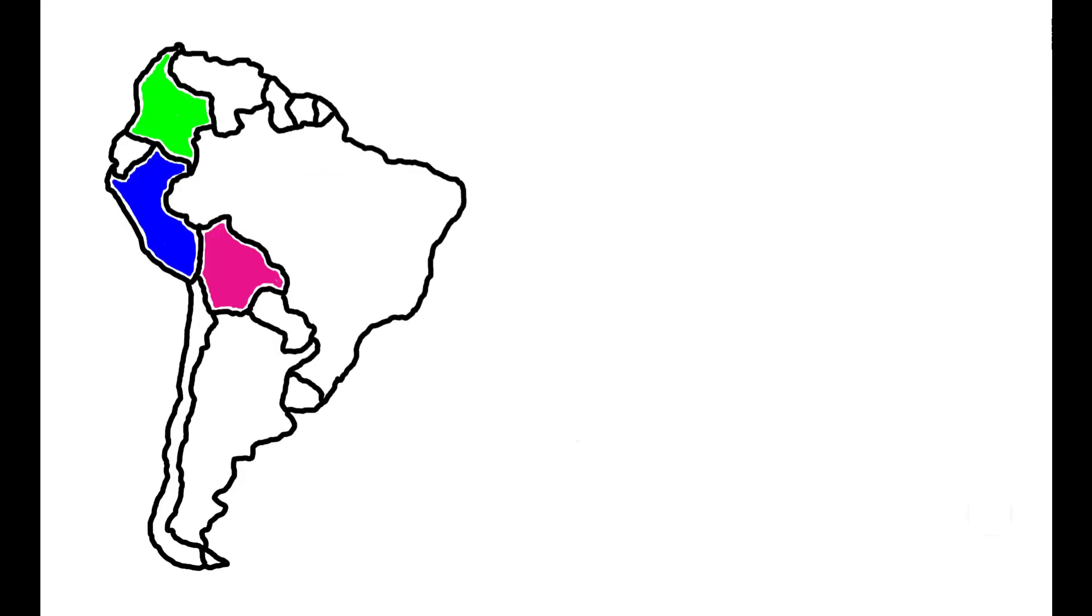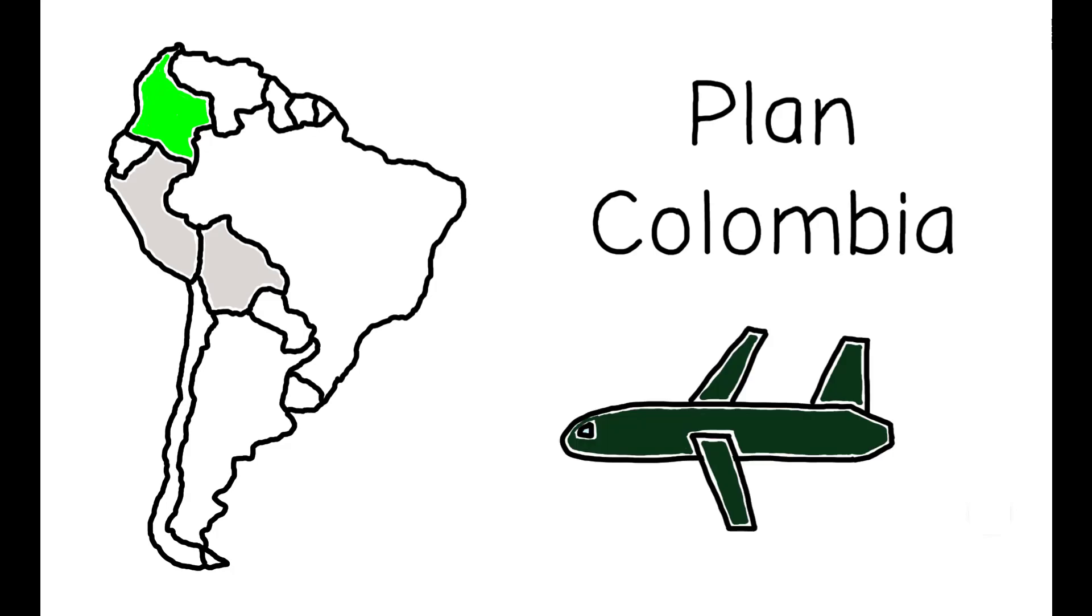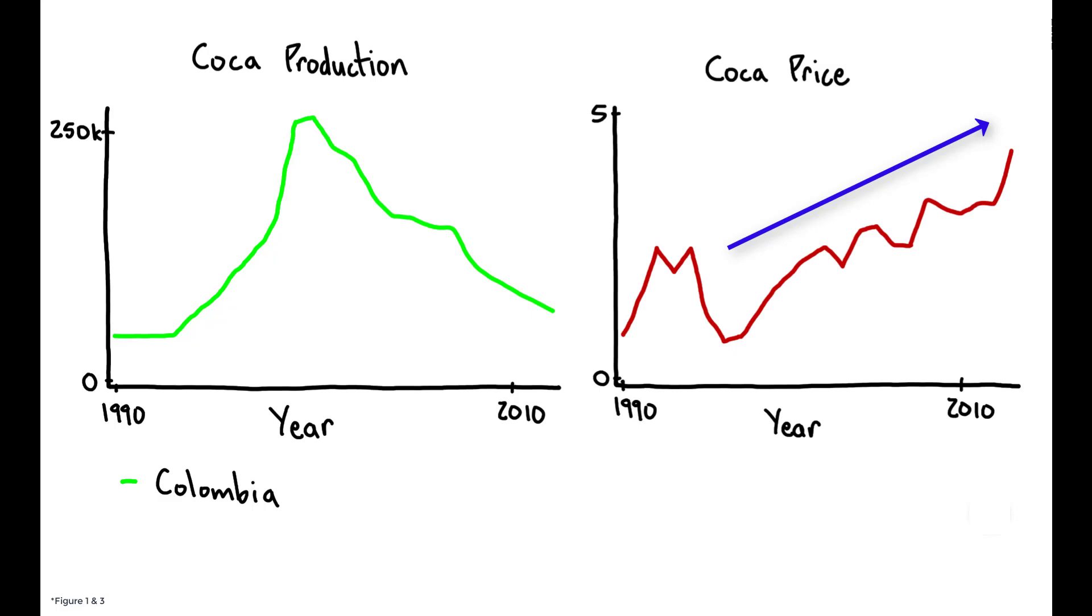In 1999, Colombia, which was then the world's largest cocaine producer, implemented Plan Colombia, a US-supported military intervention aimed at cracking down on the drug trade. These figures show the resulting decline in coca production in Colombia, and the corresponding increase in its world price as supply became constricted.